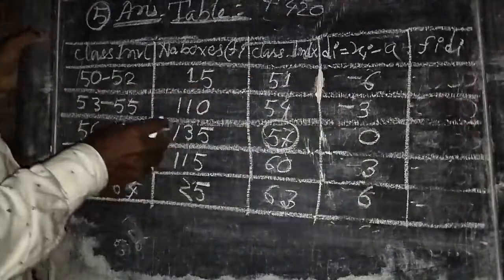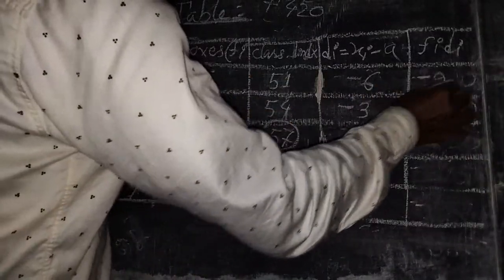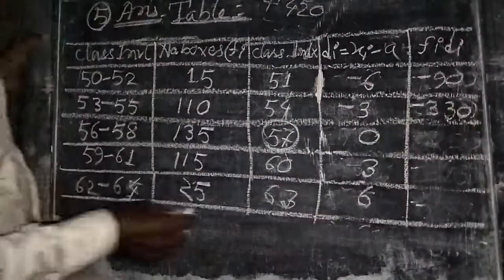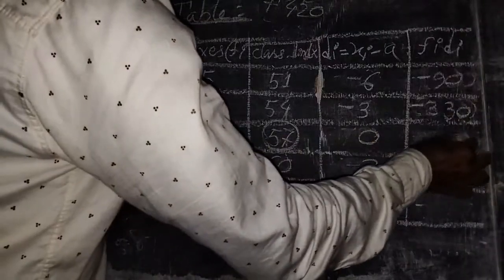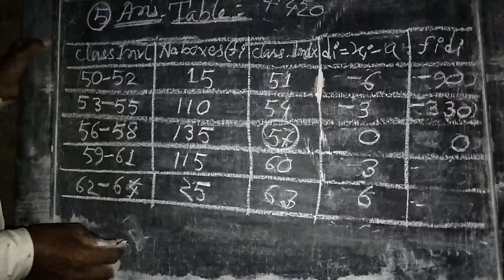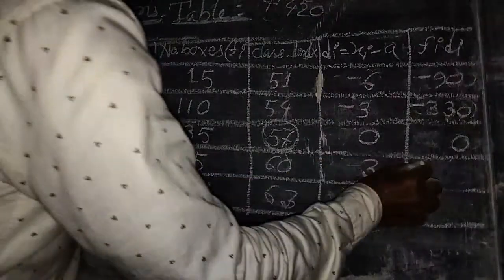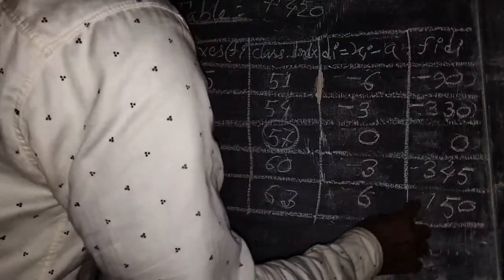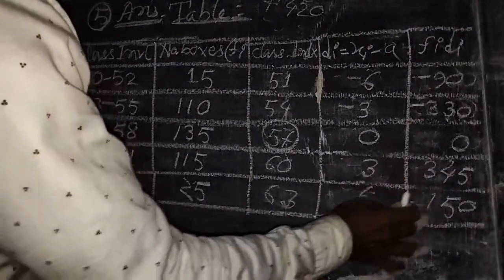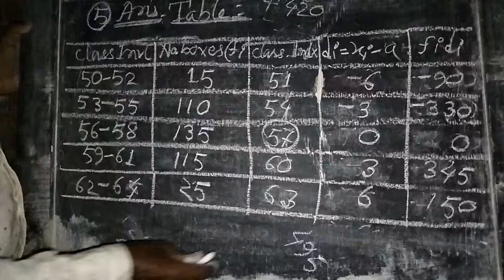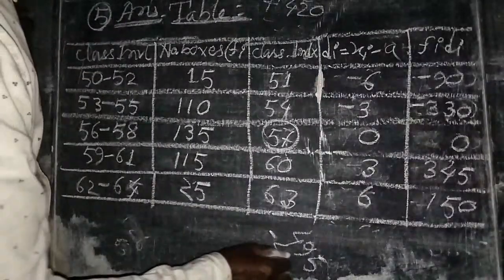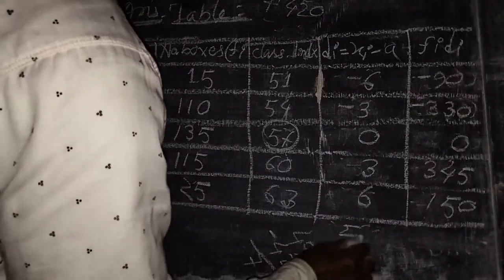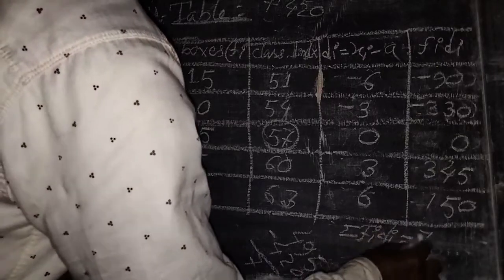Now multiplying fi and di: 15 times minus 6 equals minus 90; 110 times minus 3 equals minus 330; 135 times 0 equals 0; 115 times 3 equals 345; 25 times 6 equals 150. The positive sum is 495 and negative sum is 420, giving summation fi·di equals 75. The summation fi equals 400.